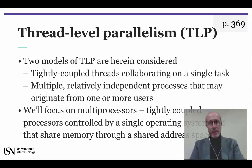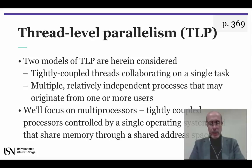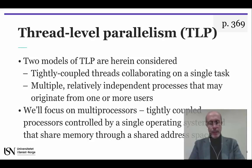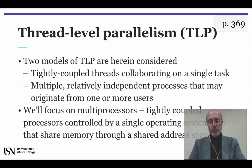Thread-level parallelism implies the existence of multiple program counters, and so it is primarily exploited in MIMD architectures. These systems exploit TLP according to two software models: the first is normally called parallel processing. The second model is a form of request-level parallelism, which may be exploited by a single application running on multiple processors, such as a database responding to queries, or by multiple applications running independently, often called multiprogramming.